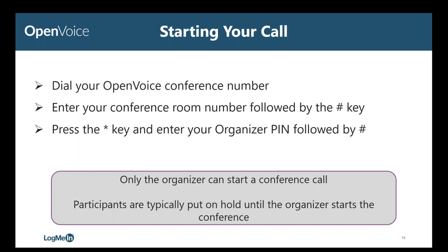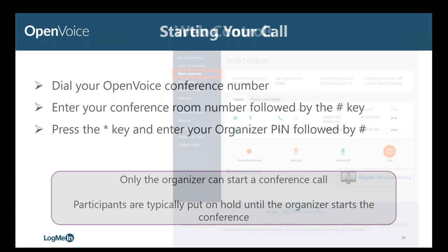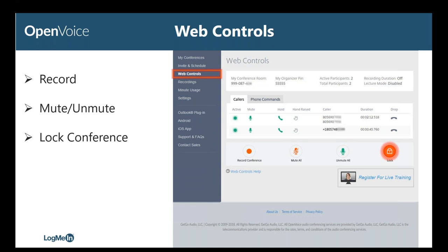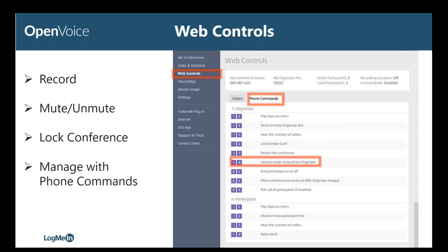Typically, participants are put on hold until the organizer joins. However, this is actually a setting you can adjust if you'd prefer to allow your participants to chat and start the call before you join — though this specific setting must be adjusted by your internal company administrator. When you're hosting a call, you have the option to log in to your organizer website and utilize the web controls to view and manage a conference call as it's occurring. This can be very helpful, especially for larger conference calls. In the web controls, you have access to various buttons for controls and commands such as recording, muting, and unmuting. You can even lock your conference call so that no other participants may dial in. There is also a tab that lists all of the organizer and participant phone commands, which can be very helpful to have handy in the event you need to utilize any on the fly during a call.